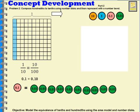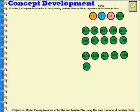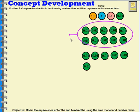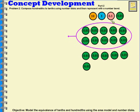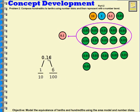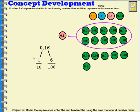Now let's think about if we had sixteen hundredths. I'm going to represent that with sixteen of these place value disks that are each worth one hundredth. One of the things I can do when I have at least ten is I can group them together and trade them in for a one-tenth disk. So now instead of having sixteen green ones, I have one that's worth one tenth and I have six green ones — six that are worth one hundredth each. So that means I have sixteen hundredths: one tenth and six hundredths.